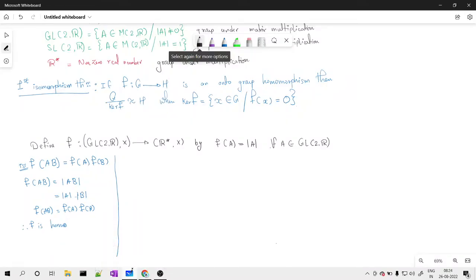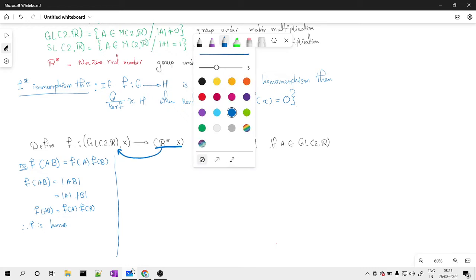So till now we have that f is a homomorphism. We want to use the First Isomorphism Theorem, for which we want the function to be onto as well. So I want to prove every point we have here should have a pre-image. For every point to have a pre-image, what we will do is...